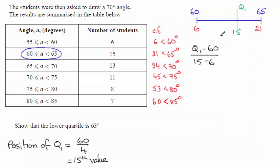And that ratio will be in exactly the same ratio as the difference between the 65 and the 60, the class width. In other words, 65 take away 60, and we compare that with the difference between 21 and 6.